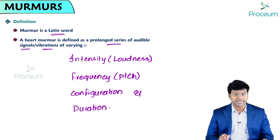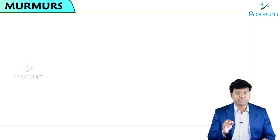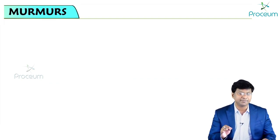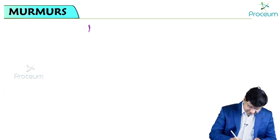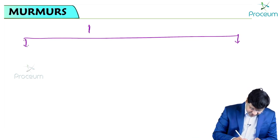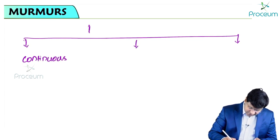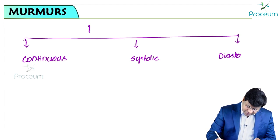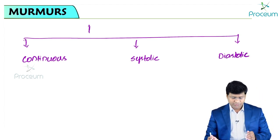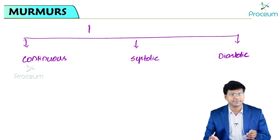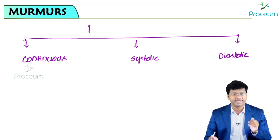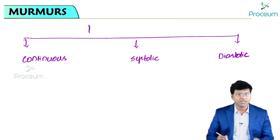Cardiac murmurs are classified depending upon the duration and timing of the cardiac cycle. They are classified as continuous murmurs, systolic murmurs, and diastolic murmurs. This classification is based on the timing of the cardiac cycle at which they appear.